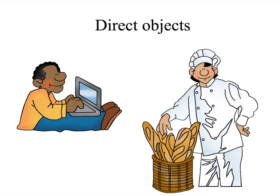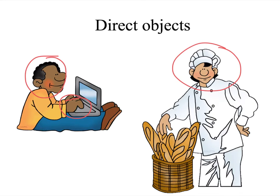Direct objects, on the other hand, get the verb done to them. So it's not going to be the same as the subject. If we have 'Jordan writes' — there's your verb — what is he writing? He's writing a paper. We have Marie — she's the subject. What did she do? She baked. She baked what? She baked bread. There's your direct object.